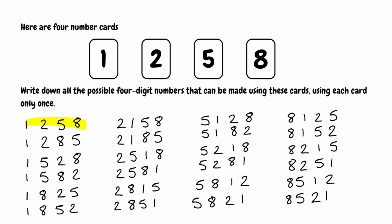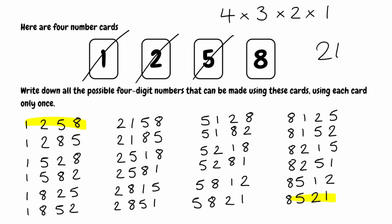We've gone from the smallest number to the largest in a systematic way, and counting them all up gives us 24 combinations. We can find that by multiplying the number of choices at each step: 4 choices for the first digit, then 3, then 2, then 1. So 4 × 3 × 2 × 1 = 24 total outcomes.